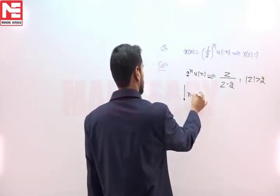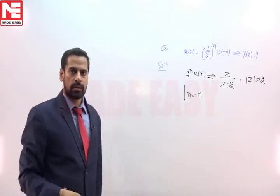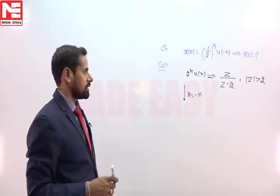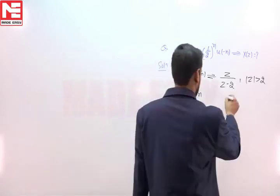We are going to use time reversal property. If in the time domain variable n is replaced by -n, then in Z transform along with ROC, Z will be replaced by Z inverse.